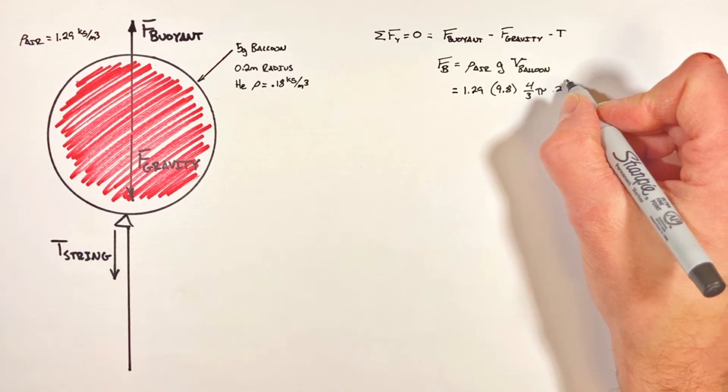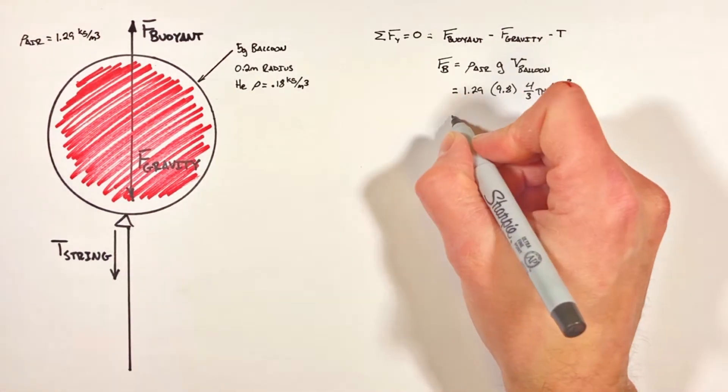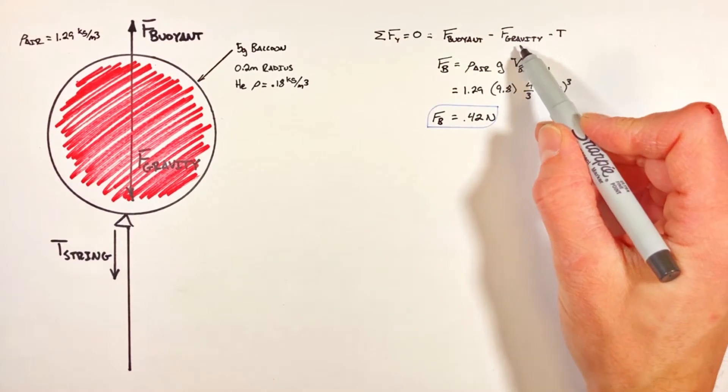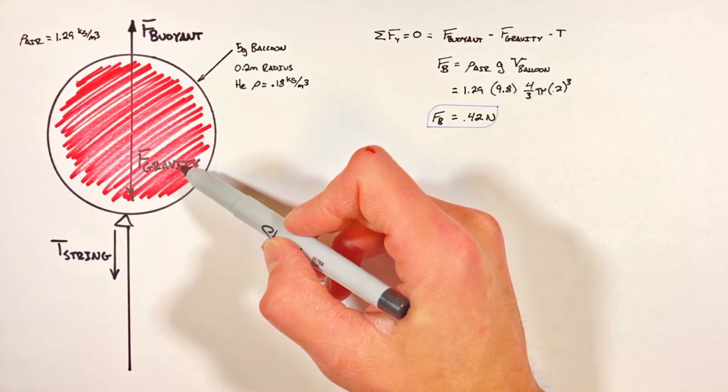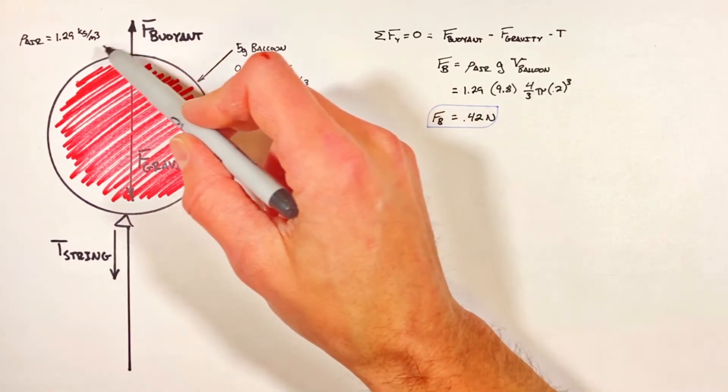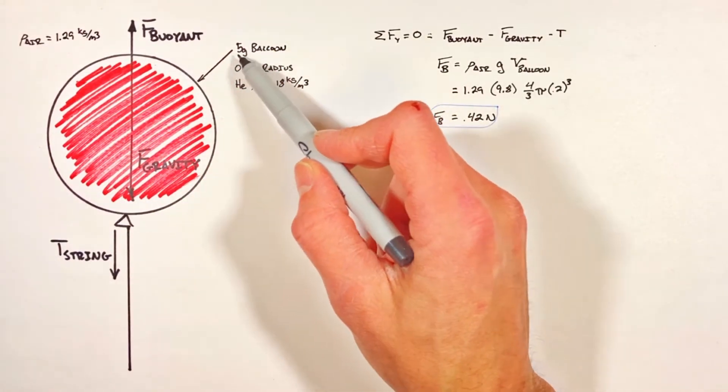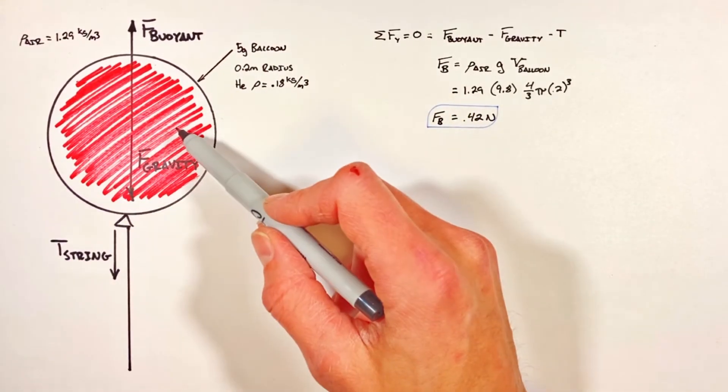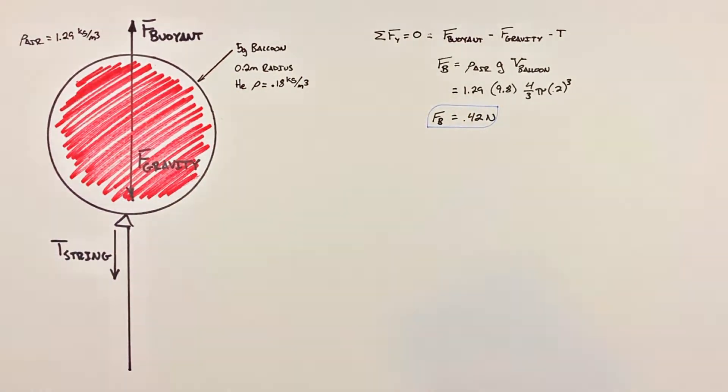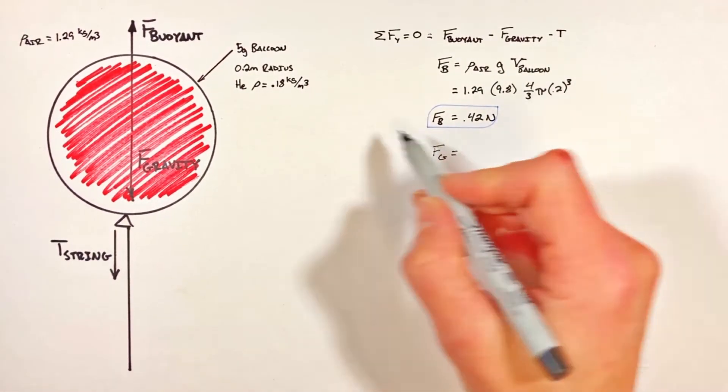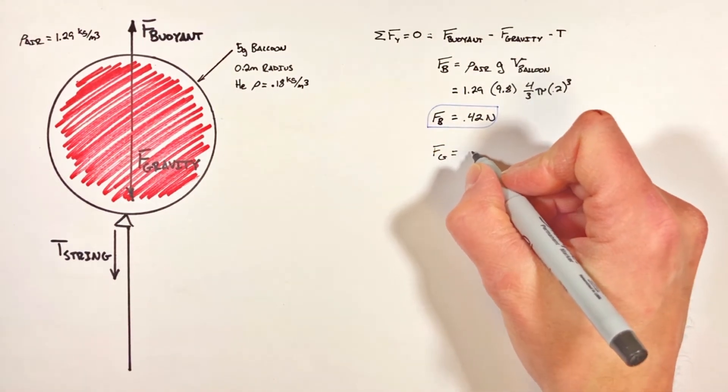Next we need to solve for the force of gravity acting on this balloon. The balloon is made up of two components: the actual rubber part of the balloon, which is five grams, and the helium inside the balloon. Our force of gravity is the force on the rubber, 0.005 kilograms times 9.8, plus the weight of the helium.